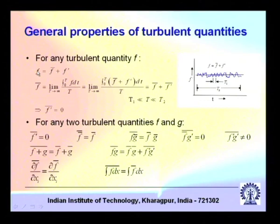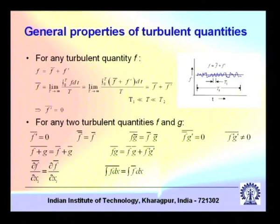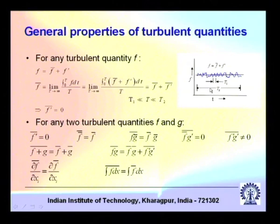The statistics of turbulent flow implied that any turbulent quantity, say f, can be decomposed into two parts: the mean of f (or the average of f) and a fluctuation component on top of that. We discussed certain types of averages like time average, space average, and ensemble average. This is some sort of average and then a fluctuation component.